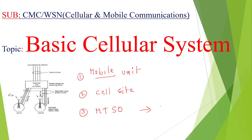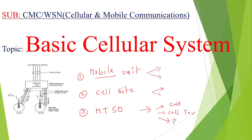The MTSO is the heart of the mobile communication system. The mobile unit has transmitting as well as receiving antennas and power cells like batteries. The cell site also requires transmitting and receiving antennas and power cells. The MTSO handles call initiation, call termination, billing activities, new user connections — everything is done by the MTSO.